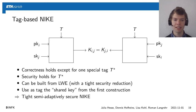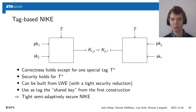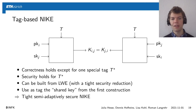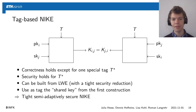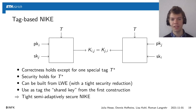Using the shared key from the first construction as the tag gives us a tight semi-adaptively secure NIKE. When we use our first construction with parameter ν set to something larger than one, we get a NIKE that is secure in a stronger security model — namely one where the adversary can ask for some of the secret keys before specifying the challenge key pair. Thus this construction gives a trade-off between key size and adaptivity of the security model.